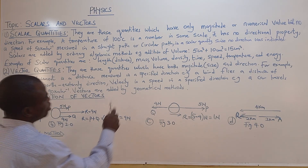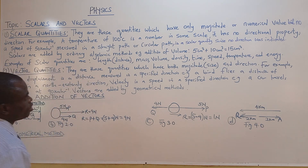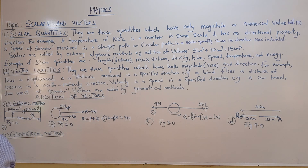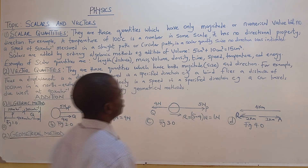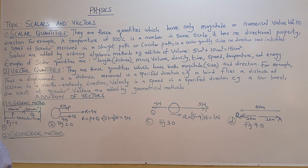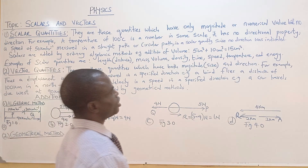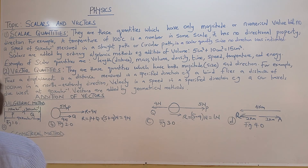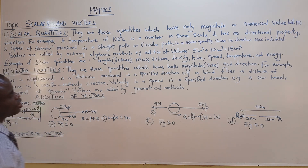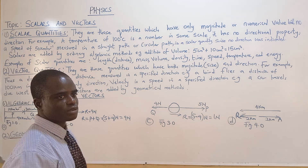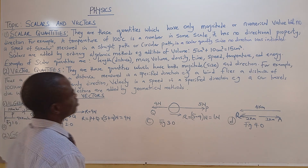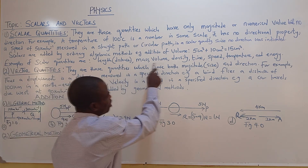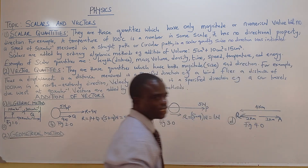Scalar quantities have only magnitude or numerical value but no direction. For example, a temperature of 100 degrees centigrade is a number on a scale — it has no direction. A speed of 50 kilometers per hour measured on a straight or circular path is a scalar quantity since no direction is indicated. Scalars are added by ordinary algebraic method. Examples of scalar quantities are length, distance, mass, volume, density, time, speed, temperature, and energy.